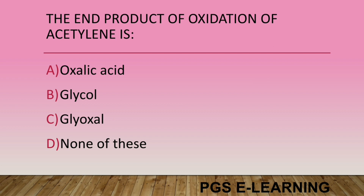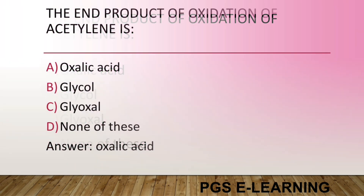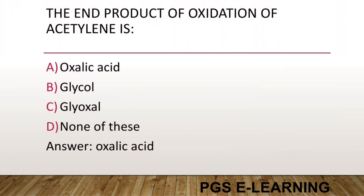The end product of oxidation of acetylene is: Option A, oxalic acid. Option B, glycol. Option C, glyoxal. Option D, none of these. Correct answer is oxalic acid.